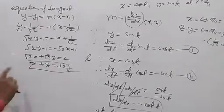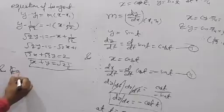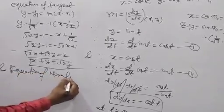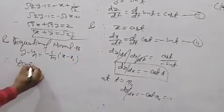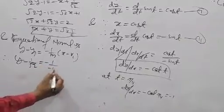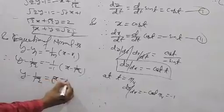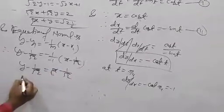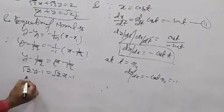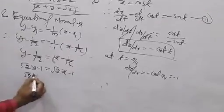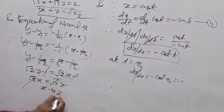Divide by √2 — √2 divided into each term — gives x + y = √2. Now, equation of normal: y minus y1 = minus 1/m · (x minus x1). With m = −1, minus 1/m = 1. Therefore y minus 1/√2 = 1 · (x minus 1/√2), giving √2·y minus 1 = √2·x minus 1, so √2·x minus √2·y = 0, meaning x minus y = 0. This is the answer.